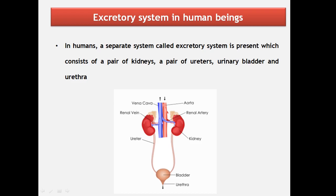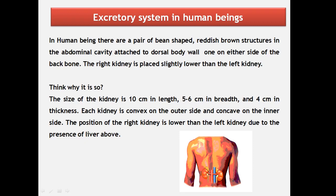The excretory system consists of a pair of kidneys, a pair of ureters, a urinary bladder - a bag-like structure - and a urethra. Today we will study the external structure and location of the kidneys.